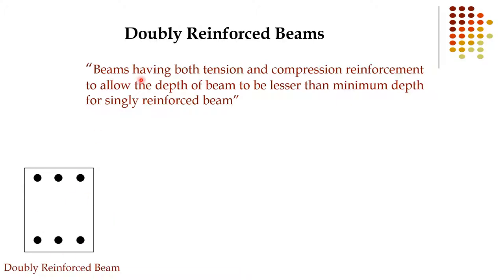Here is the doubly reinforced beam figure. Doubly reinforced beams are beams having both tension and compression reinforcement. Above the neutral axis compression reinforcement is provided, and below the neutral axis tension reinforcement is also present. This allows the depth of the beam to be lesser than the minimum depth for a singly reinforced beam.